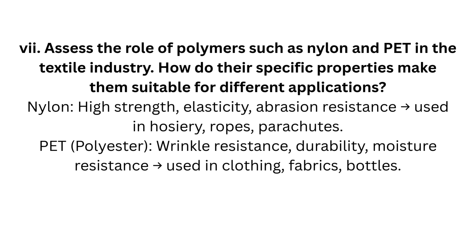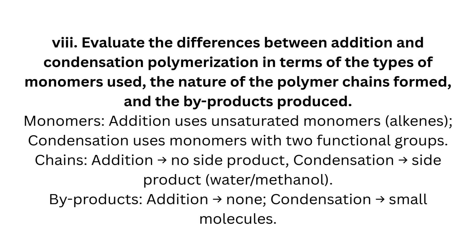Long answer Question 7: Assess the role of polymers such as nylon and PET in the textile industry. How do their specific properties make them suitable for different applications? Nylon: high strength, elasticity, abrasion resistance — used in hosiery, ropes, and parachutes. PET (polyester): wrinkle resistance, durability, moisture resistance — used in clothing, fabrics, and bottles.